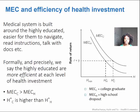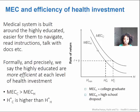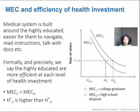Formally and precisely, the way that we describe that phenomenon is by saying that highly educated individuals are more efficient at each level of investment in health. The marginal efficiency curve of the person with the high school diploma or less is literally lower than the marginal efficiency curve for the person with the college education. So at a given level of health investment, you're going to be able to produce more health if you're more highly educated. As a result, your optimum level of health, traced along the x-axis, is higher for the more highly educated individual because they can obtain that level of health more easily.